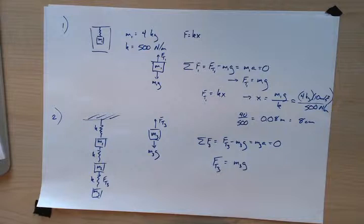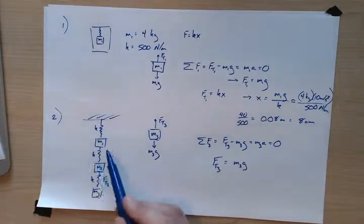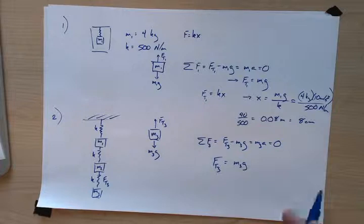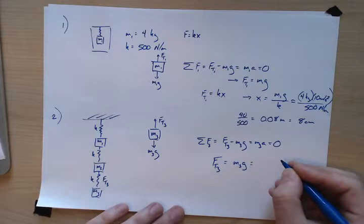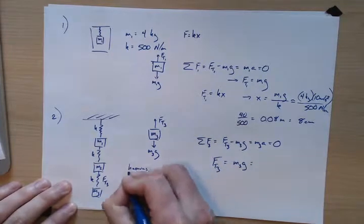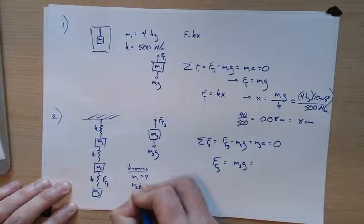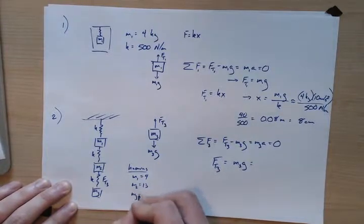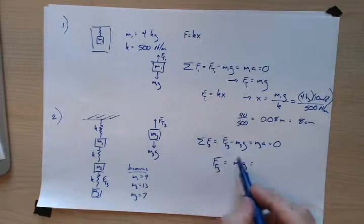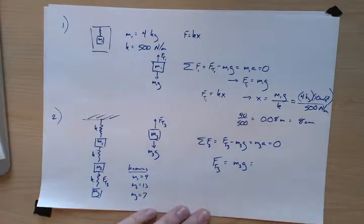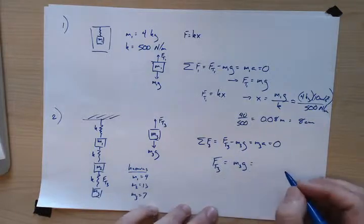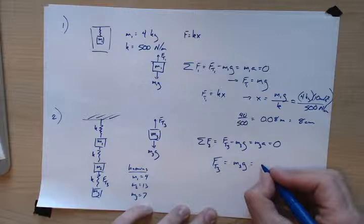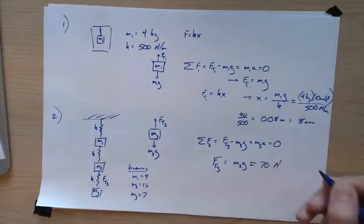Some of you might have reasoned that the top masses don't matter for this bottom spring. Even if you didn't, following the general rules gets you the right answer. I'll compute symbolically first and plug in at the very end — you'll see why on the next part. With m1=4, m2=13, m3=7 kilograms, ft3 equals m3g, which is roughly 70 newtons.